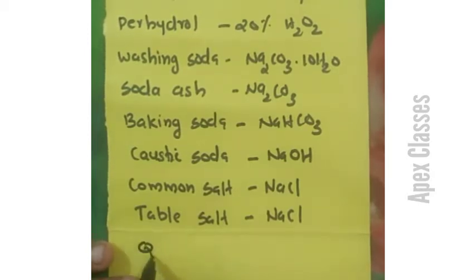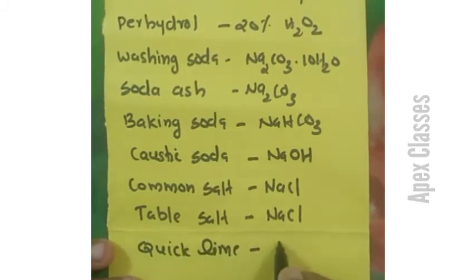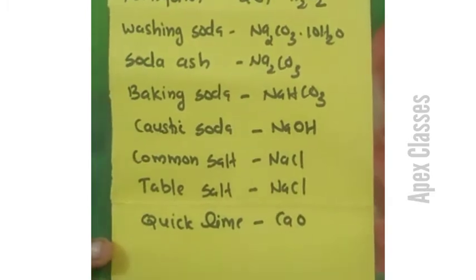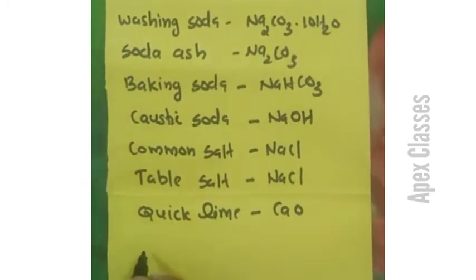Quicklime. The formula for Quicklime is CaO.